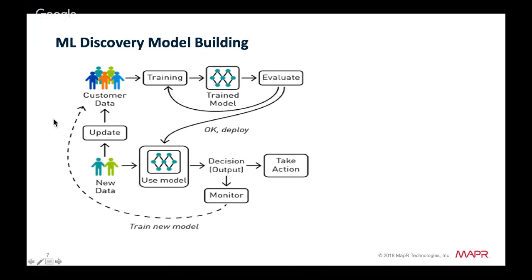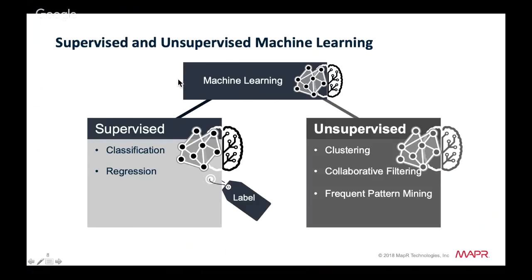It's also important to monitor your deployed model and update it. Machine learning algorithms fall into two classes: supervised and unsupervised. With supervised learning you have a known outcome or label. Unsupervised algorithms do not have outputs or labels in advance. In this example we'll be using unsupervised learning.